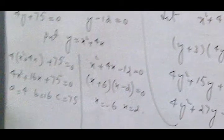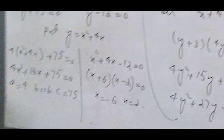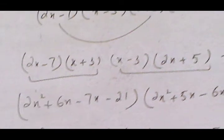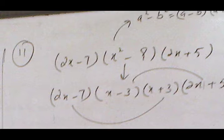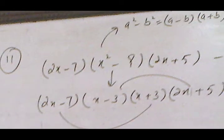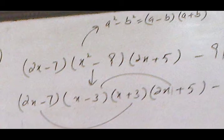At the end, if it factorizes, factorize; otherwise apply the quadratic formula on both equations. Here again a different case: we have x² minus 9, and we apply the difference of squares formula a² minus b² equals (a minus b)(a plus b).